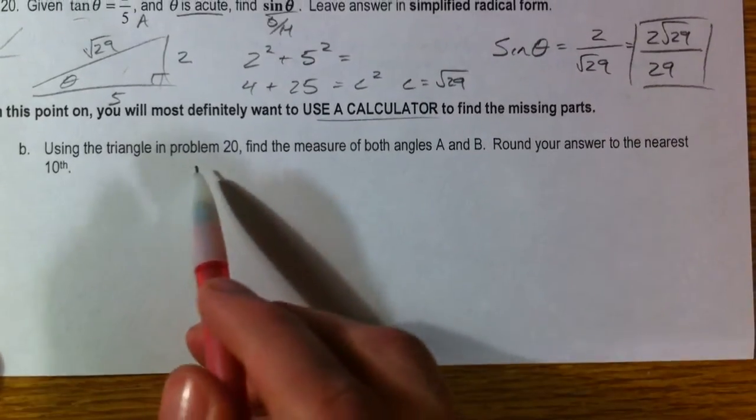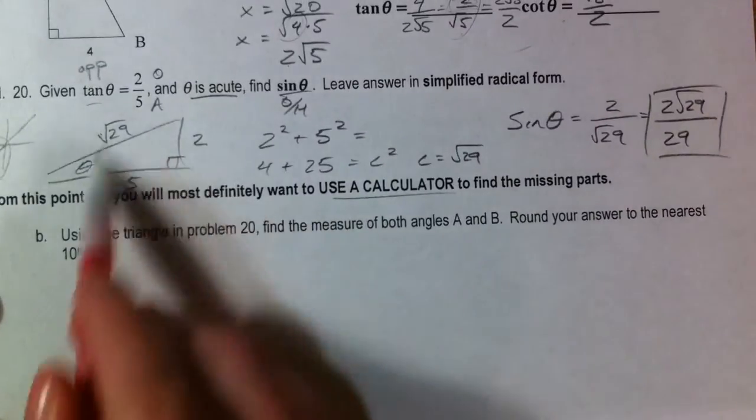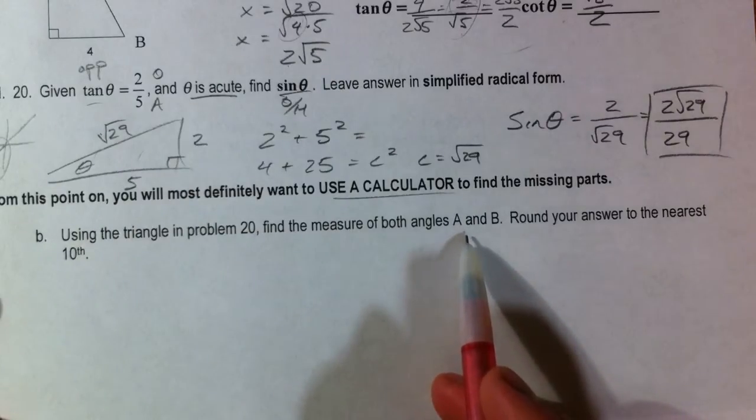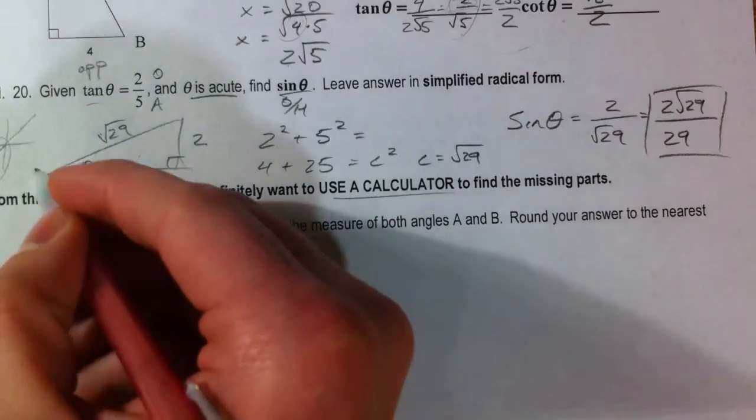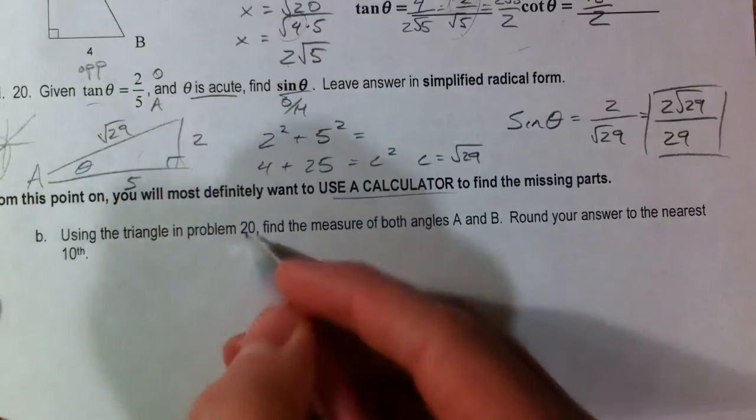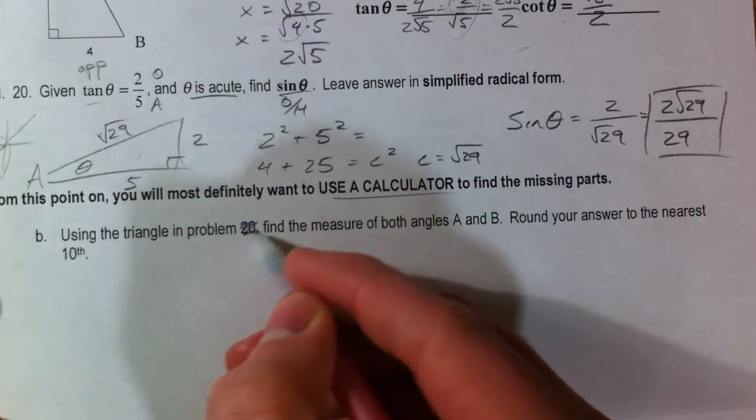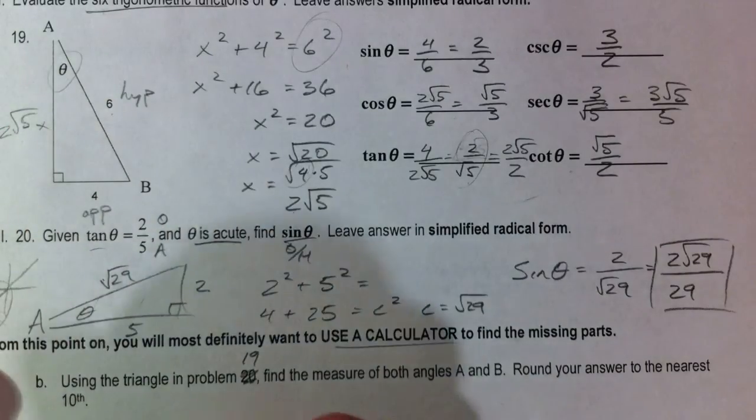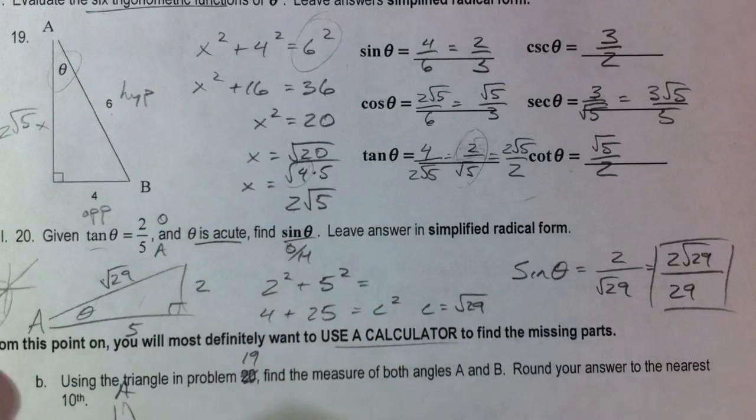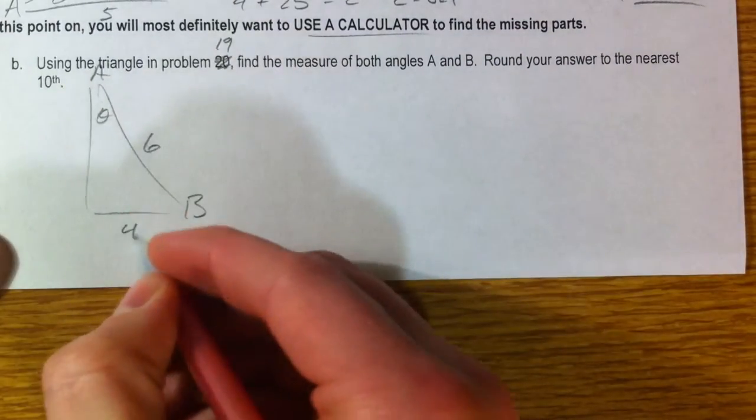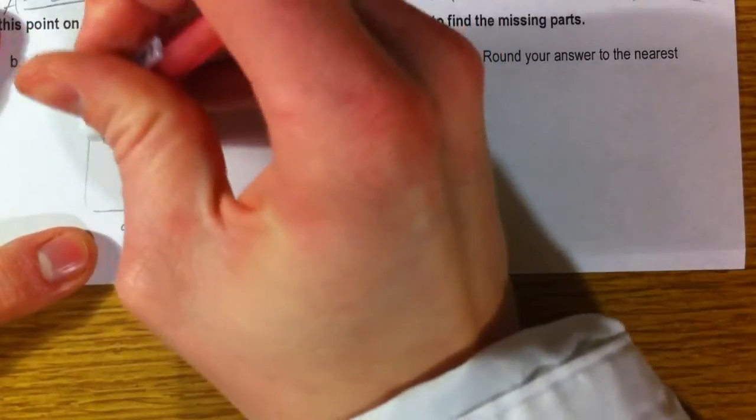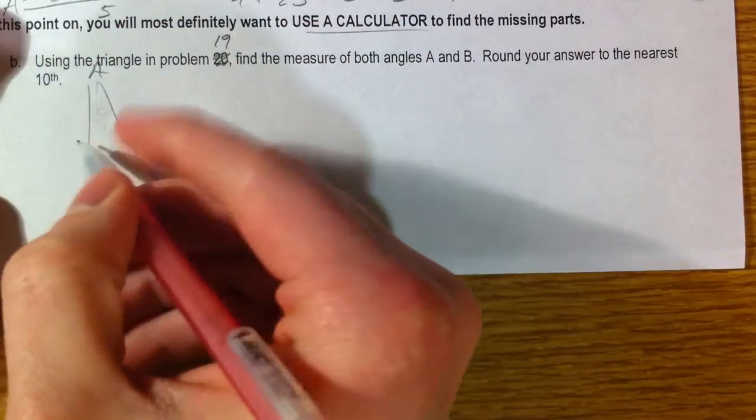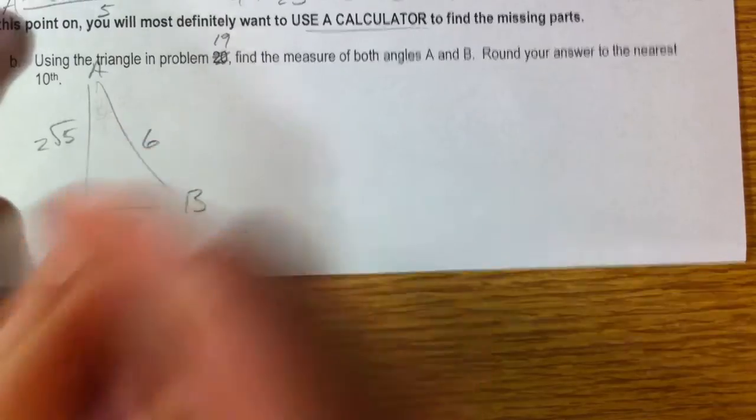So, use the triangle in problem 20. So this is our problem 20 right here. Find the measure of both angles A and B. Now, let's assume that we had, actually I believe I actually meant this to be 19, so let's correct that. Problem 19, all the way back up here because it's actually labeled A and B. A, B, our angle, this is 6 and this is 4, and it doesn't matter, we can use it with our 2 root 5 if we want to, or we can use it without, I'm just going to leave it out.